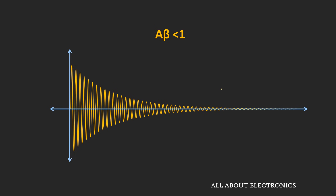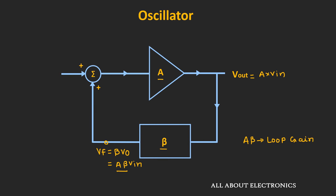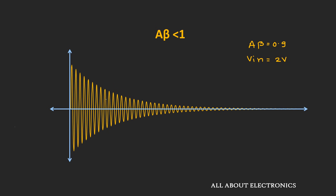If the loop gain Aβ is less than 1, then over time the input signal will die out. For example, if Aβ equals 0.9 and the input voltage Vin is 2V, then after passing through the amplifier and feedback circuit, the signal becomes 2V × 0.9 = 1.8V. Every time the signal passes through this loop, the amplitude reduces by a factor of 0.9, and over time the oscillations in the circuit will die out.